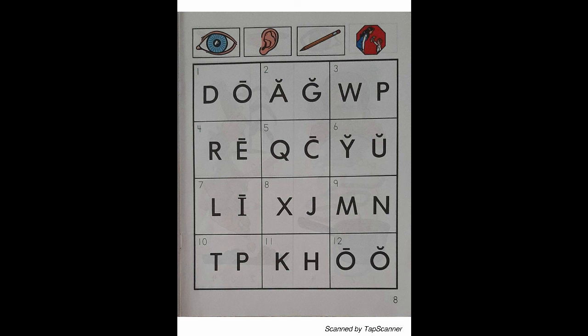Look at the letter in box 4. Listen as I say the sound of the letter. Y. With your pencil, circle the letter that reads Y.